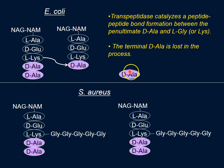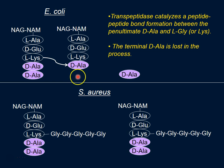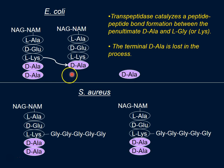In the process of that happening, the terminal D-alanine of the target strand leaves. It's important to understand this process by which D-alanine is eliminated. If that D-alanine wasn't there in the first place, this cross-linking will not happen.